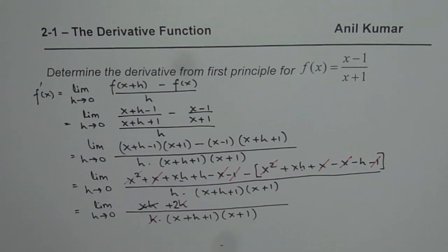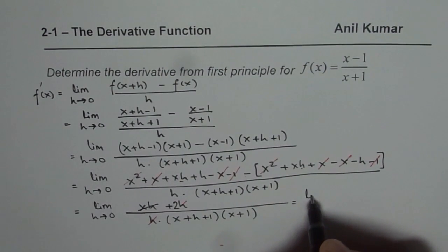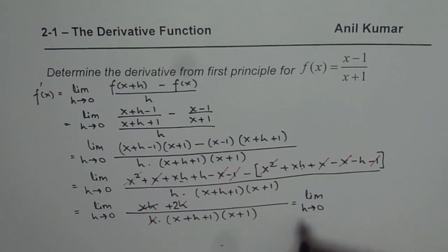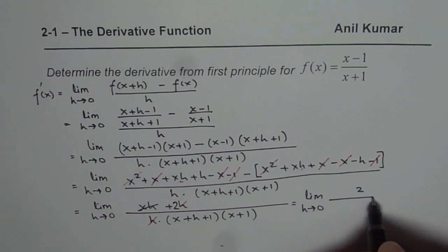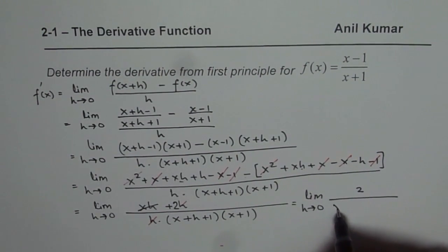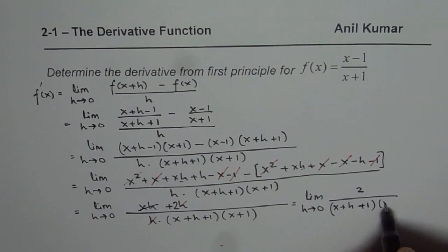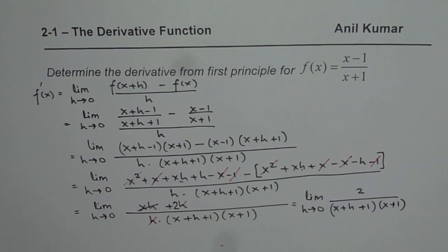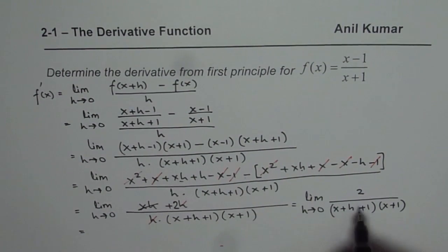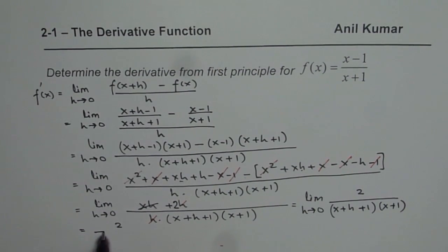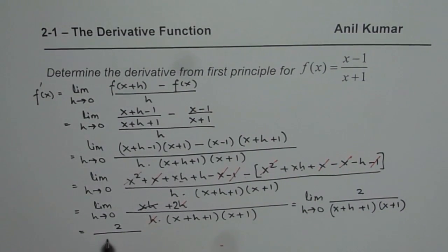We are left with the limit as h approaches 0 of 2 over x plus h plus 1 times x plus 1. Now we can substitute h equals 0, which gives x plus 1 whole square in the denominator.